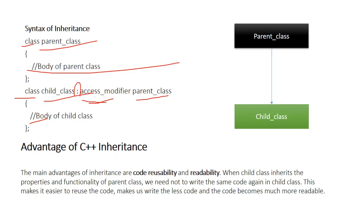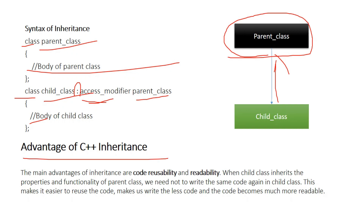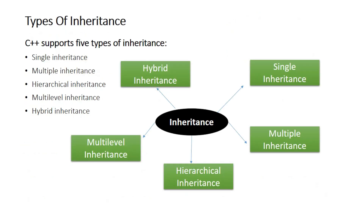In the diagram, the parent class has a child class that has acquired its properties. The main advantage of C++ inheritance is code reusability and readability — code optimization. When a child class inherits the properties and functionality of a parent class, we do not need to write the same code again in the child class. This makes it easier to reuse code and write less code, making it much more readable.